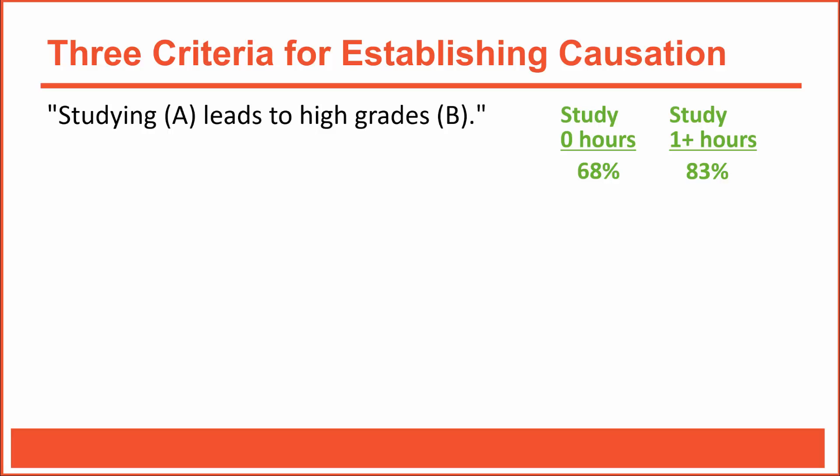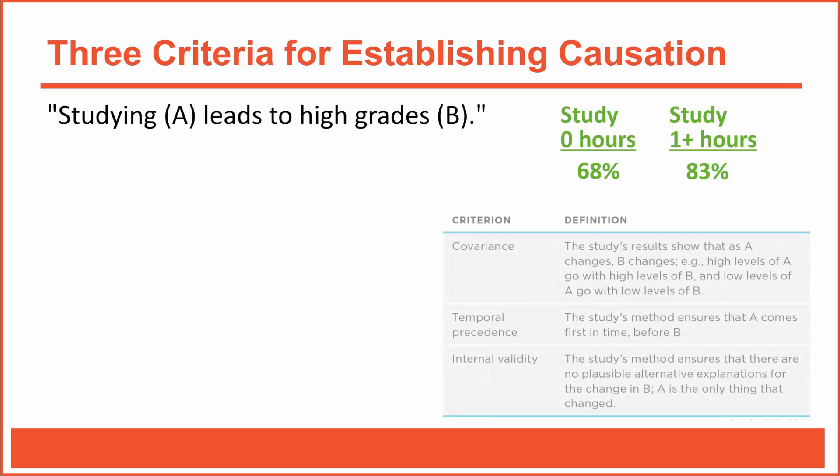Am I justified claiming that studying leads to higher grades? Remember, the words we use matter. When I claim that studying leads to higher grades, I'm suggesting that studying causes higher grades. That's fine, as long as my research project meets the three criteria necessary for establishing causation: covariation, temporal precedence, and internal validity.